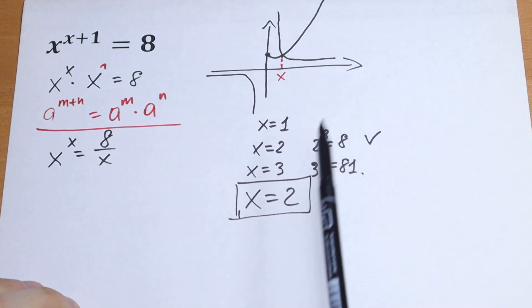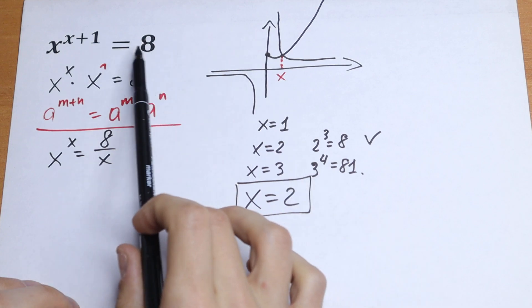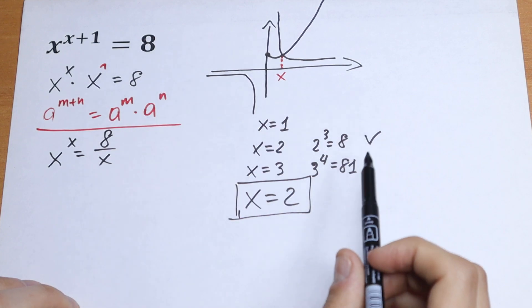Because this root is so obvious. But if we have a different number right here, this method does not work.